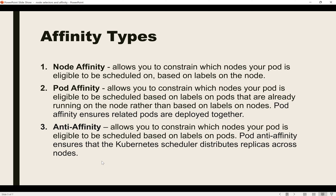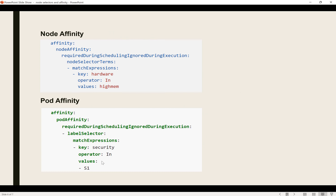The third type is pod anti-affinity, which is similar to pod affinity — it also checks the label of the pod instead of the node. But in this case, when it matches the label of the pod, those pods will be scheduled on different nodes, not the same node.